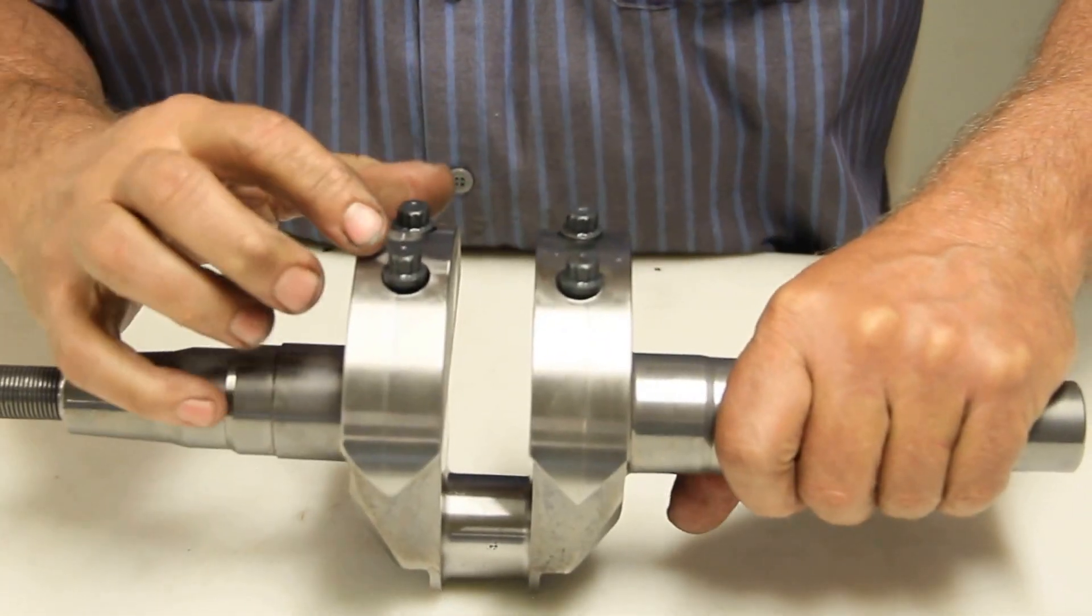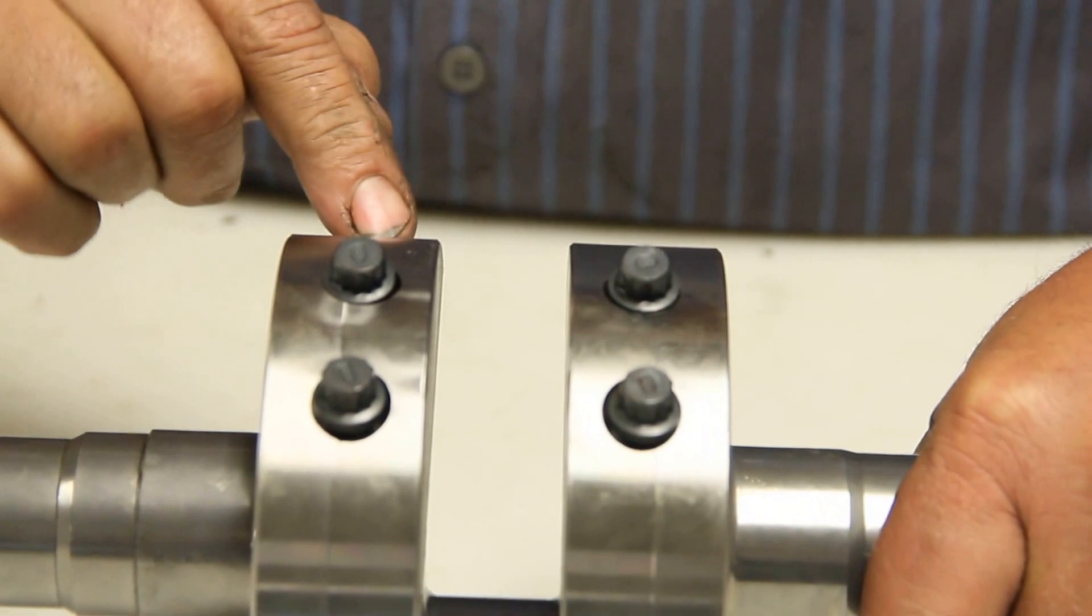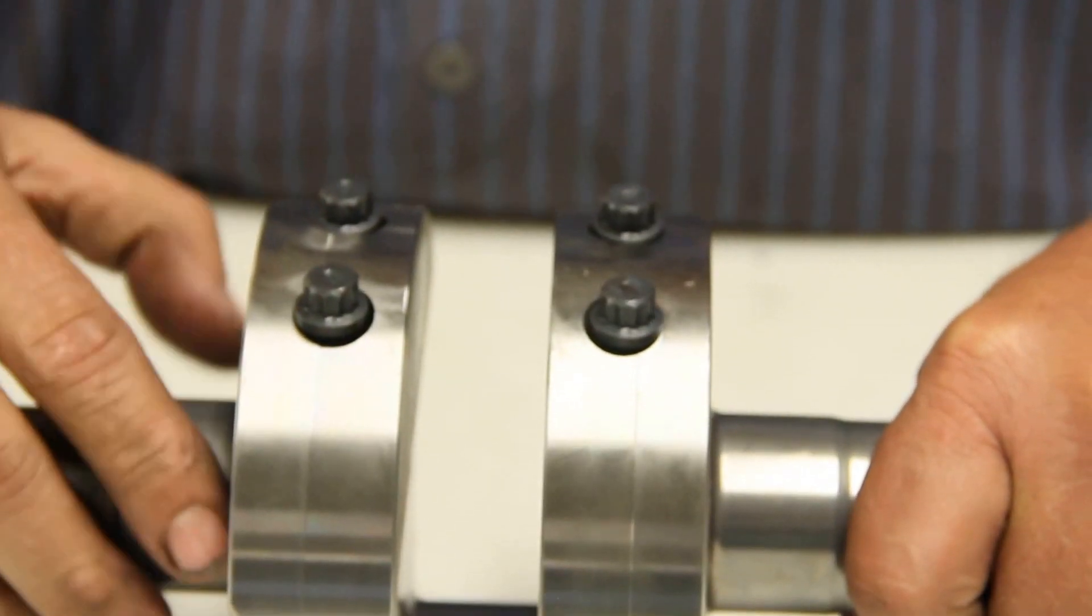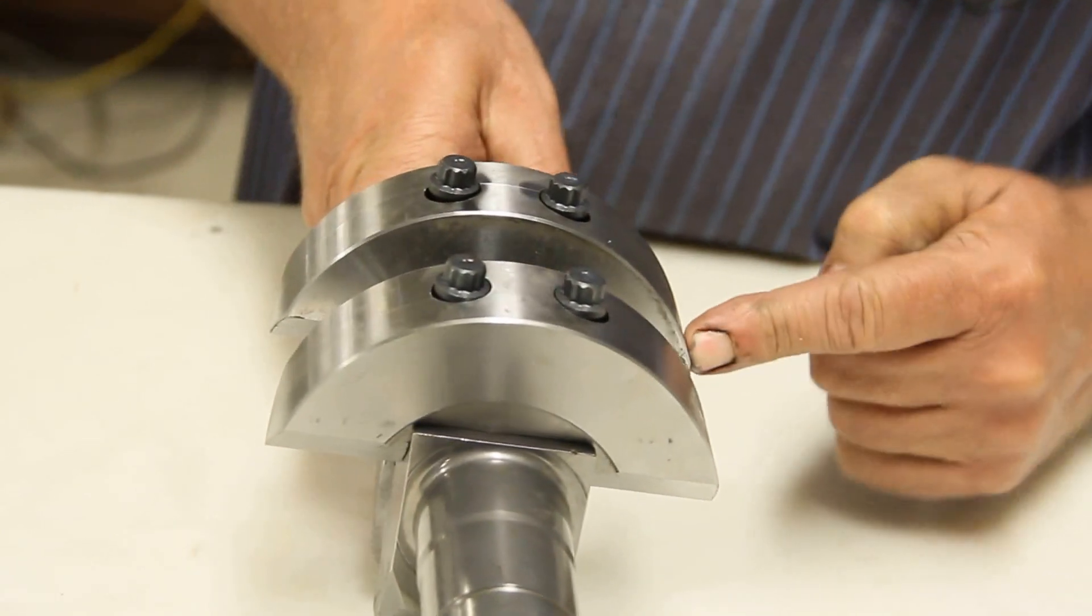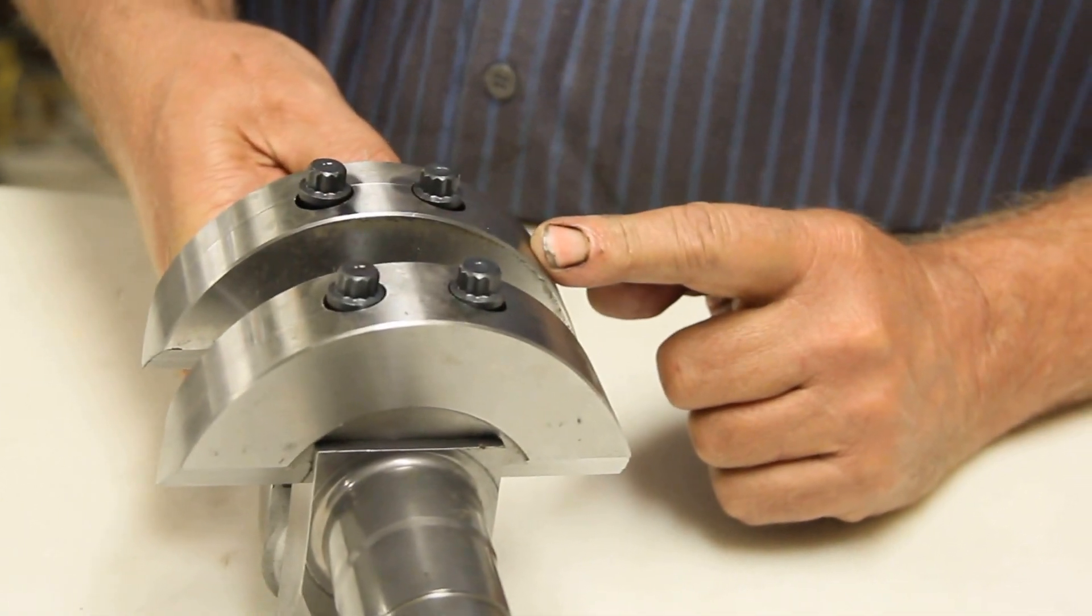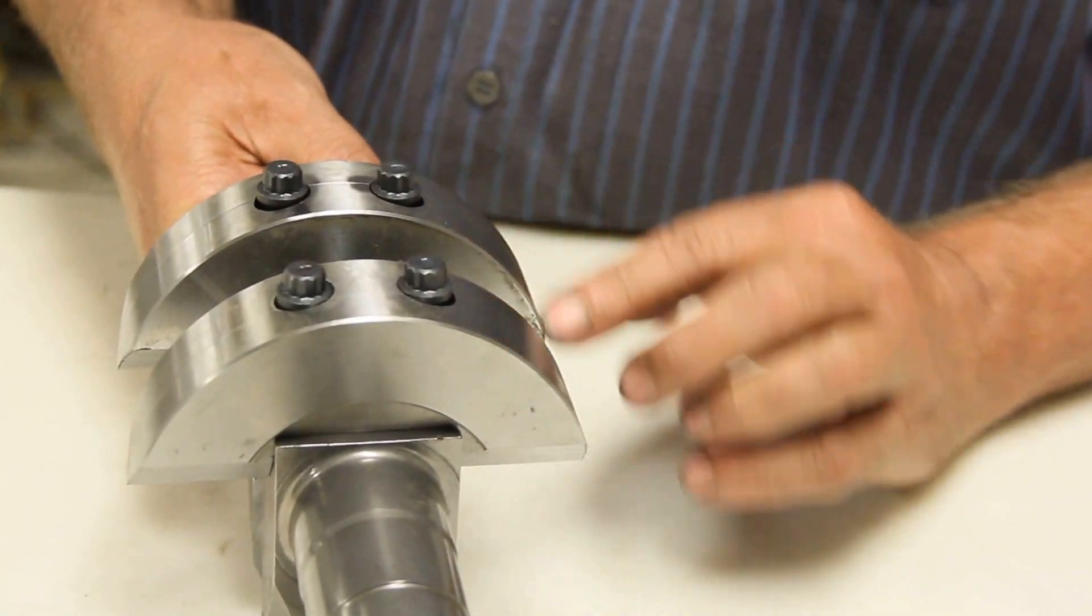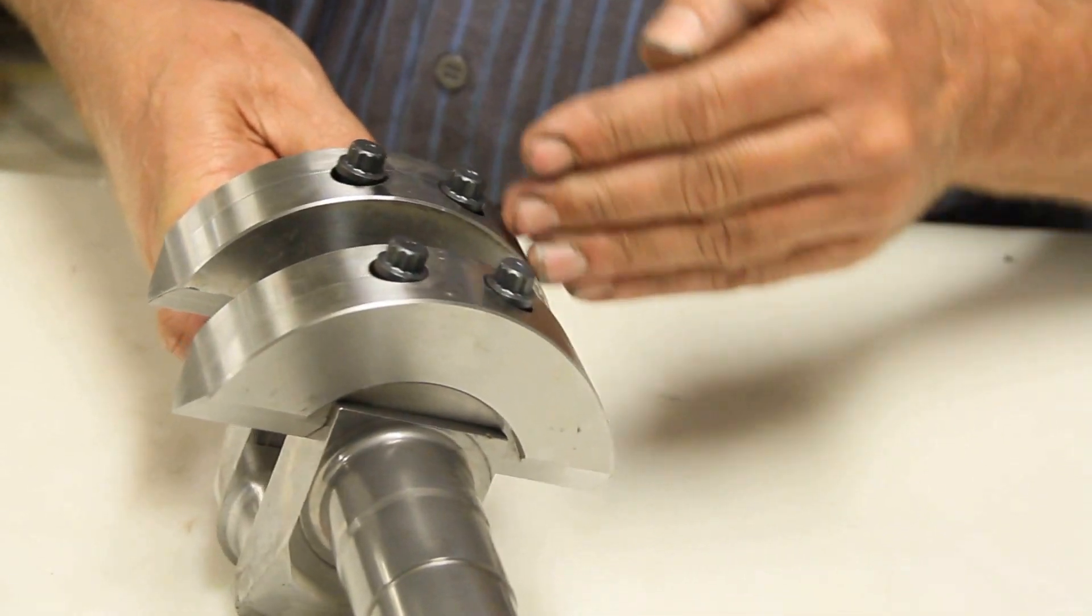And this crank here, this lower, if you run a higher lift cam, as it comes around the camshaft lobe is going to run right into this counterweight. So what you're going to need to do is clearance the counterweight for the camshaft to clear first.